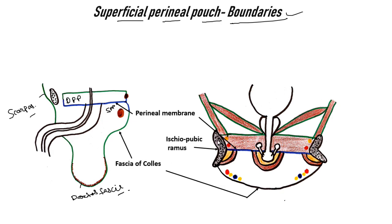On each side it is bounded by the ischiopubic ramus. On the posterior side, the Colles' fascia and the perineal membrane will fuse, so posteriorly it is closed. On the anterior side the space is open, and it may continue as the superficial inguinal space.